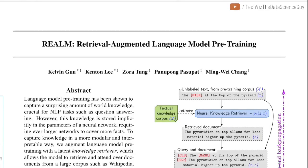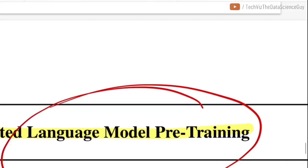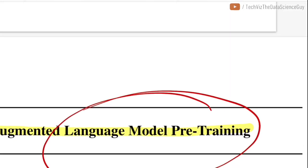Hi there, welcome to the new video. Today we'll be talking about this paper titled REALM: Retrieval Augmented Language Model Pre-training, from researchers at Google Research. As we can see in the title, they are talking about language model pre-training, where most systems use a self-supervised pre-training scheme.